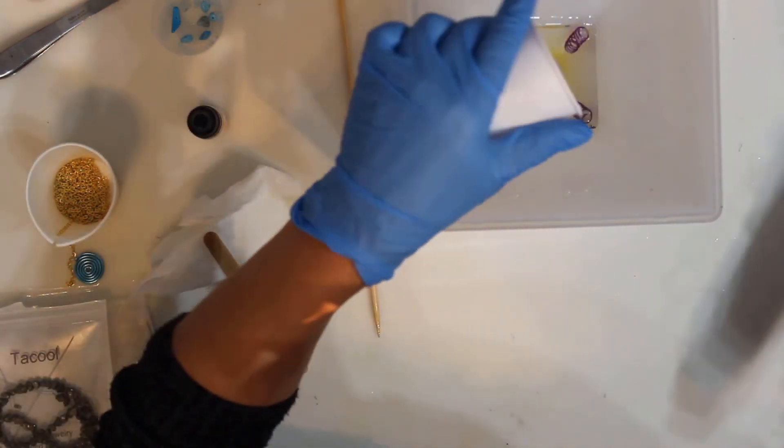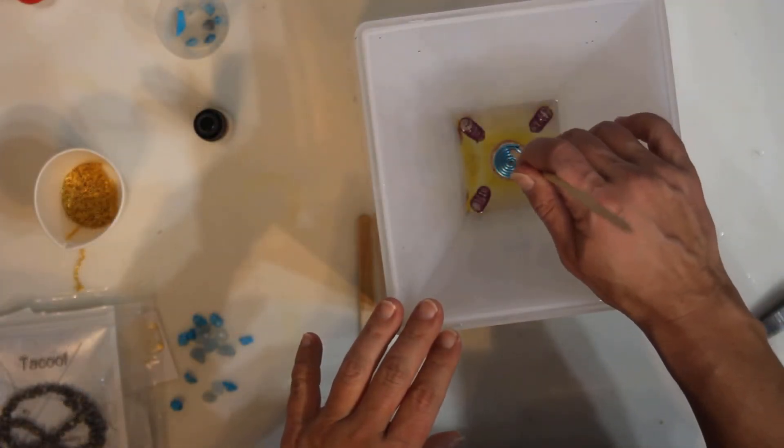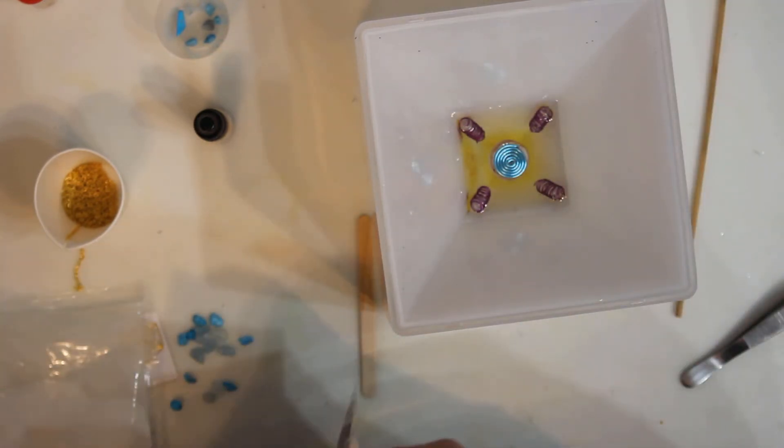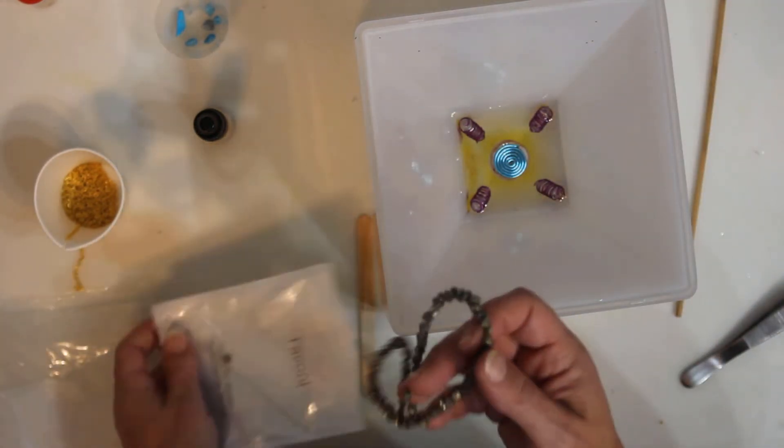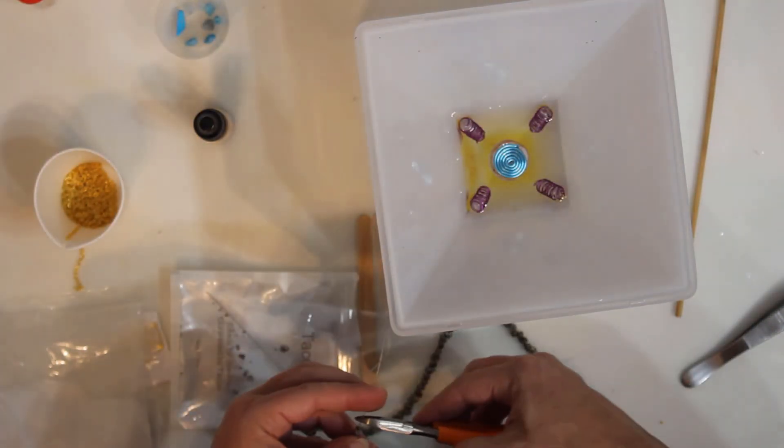Once everything is submerged we will begin the base layers. I will start with a spiral made from blue wire. This spiral represents the great wind storms of the planet Jupiter.